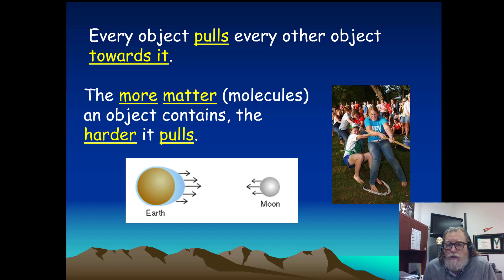So the mass of the Earth, which is significantly more than the mass of the Moon, about six times, will pull more on the Moon than the Moon pulls on the Earth. But the Moon does exert a force on the Earth. It's just much less of a force because the Moon has less mass, fewer molecules.